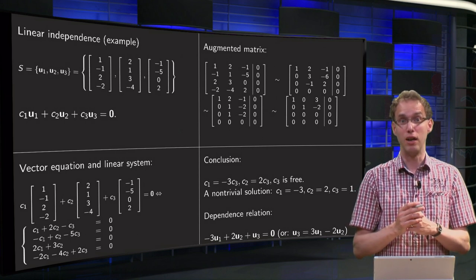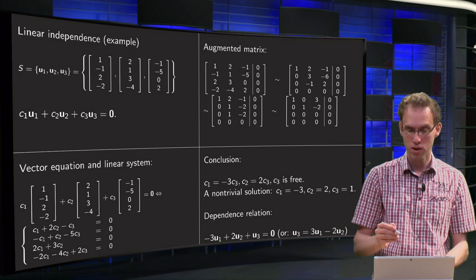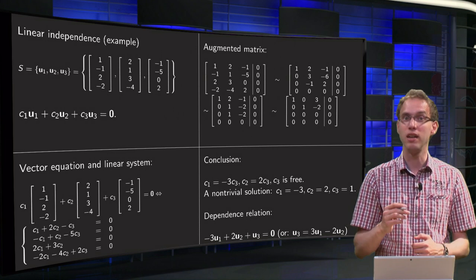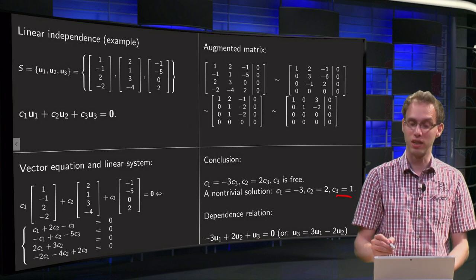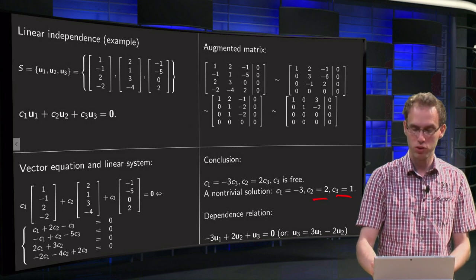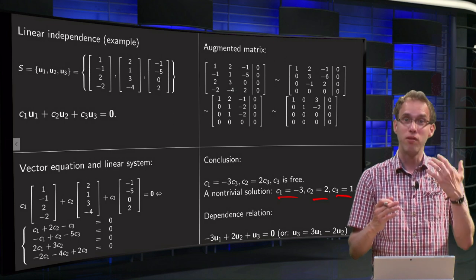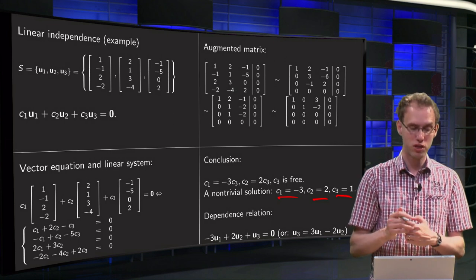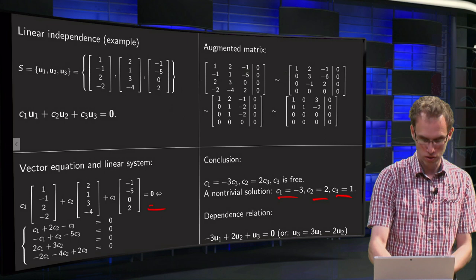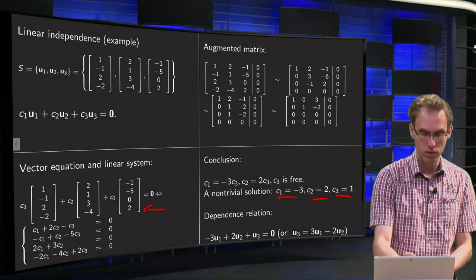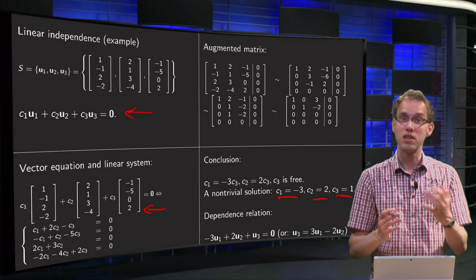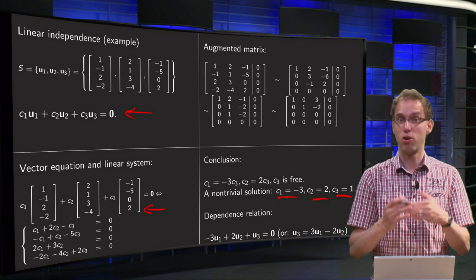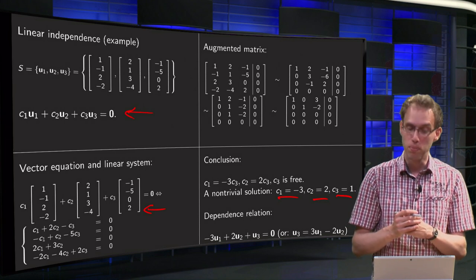That means that we find a non-trivial solution of our system. For example we can choose any non-zero value of c3, so let's pick for example c3 equals 1, then we get c2 equals 2 and c1 equals minus 3. We find a non-trivial solution of our vector equation, so a non-trivial solution of our vector equation over there. That means that our set, our original set, is linearly dependent.